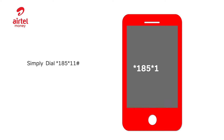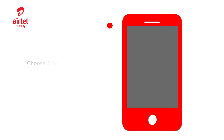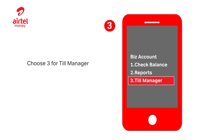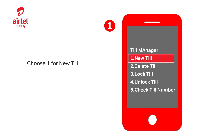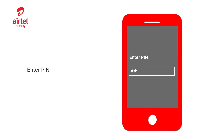Dial star 185 star 11 hash. Choose 3 for Biz Account. Choose 3 for Teal Manager. Choose 1 for New Teal. Enter the MSISDN for the number with no zero. Enter the PIN.